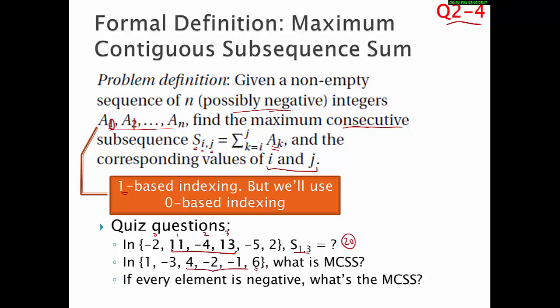In this example, actually the MCSS is if you take the sum of these guys, you get four plus negative three is one plus six is seven. That actually works, so just recognize that you might want to bridge some negative ones if the positive on the other side is worth it. That's one way of thinking about it.